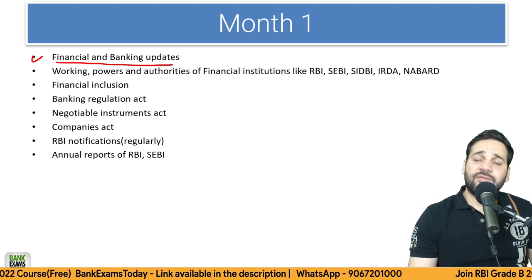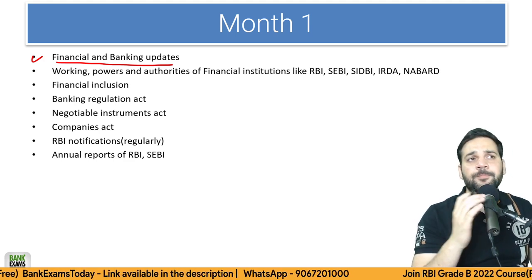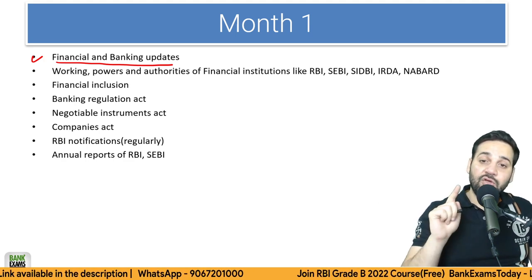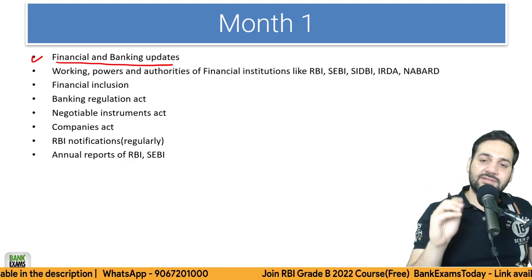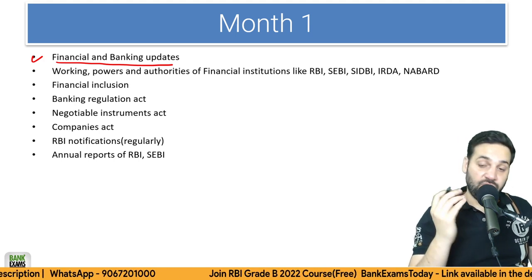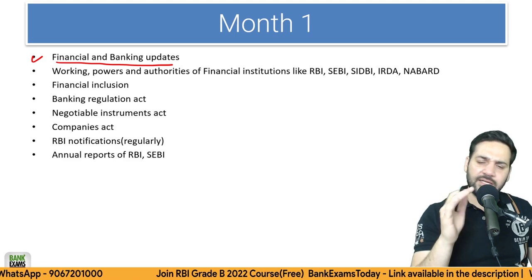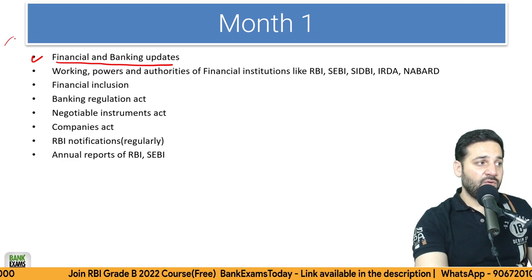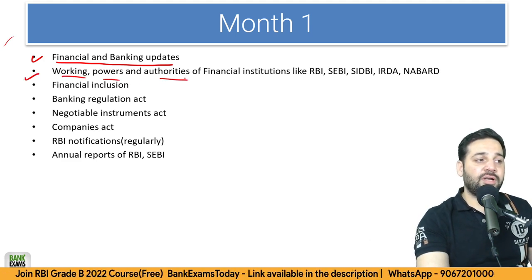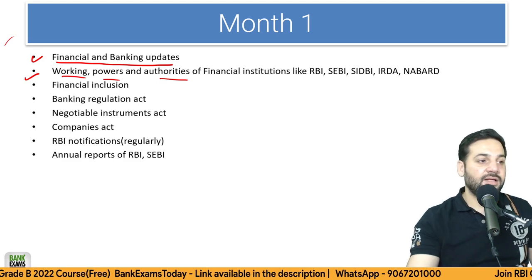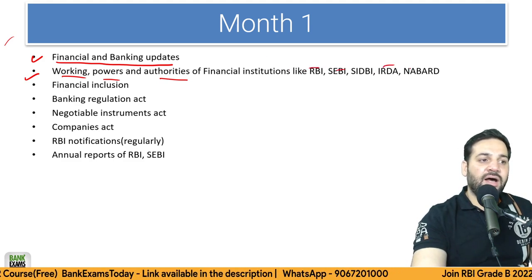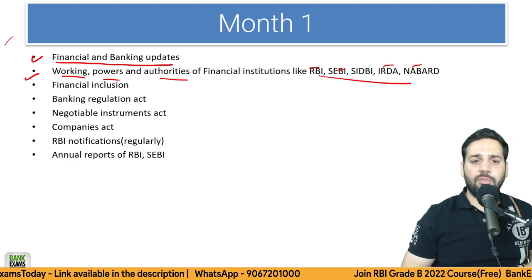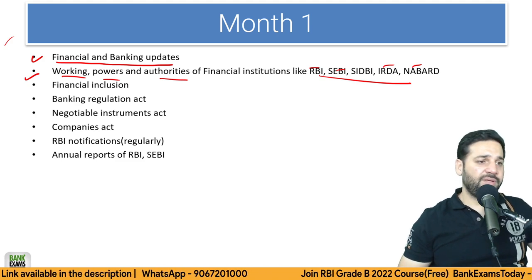Along with static finance, start reading banking and financial updates. You can get current affairs from many resources like Affairs Cloud and Vision IAS, but you won't get financial awareness or RBI circular analysis from those. We will cover working, powers, and authorities of financial institutions — RBI, SEBI, SIDBI, IRDA, NABARD — all their regulatory powers and authorities, which have appeared in previous year papers.